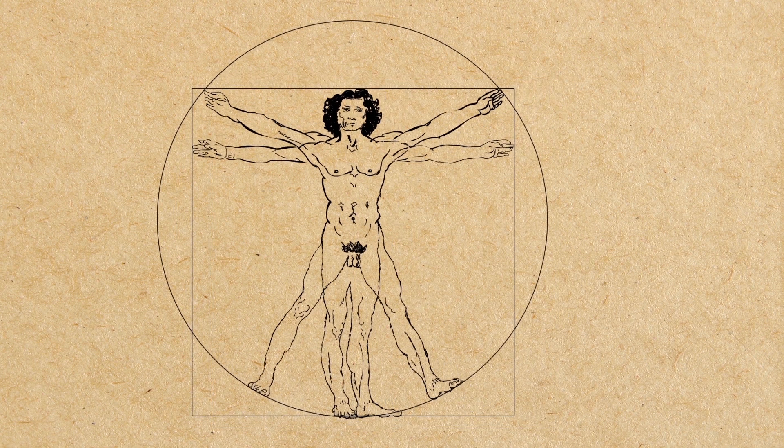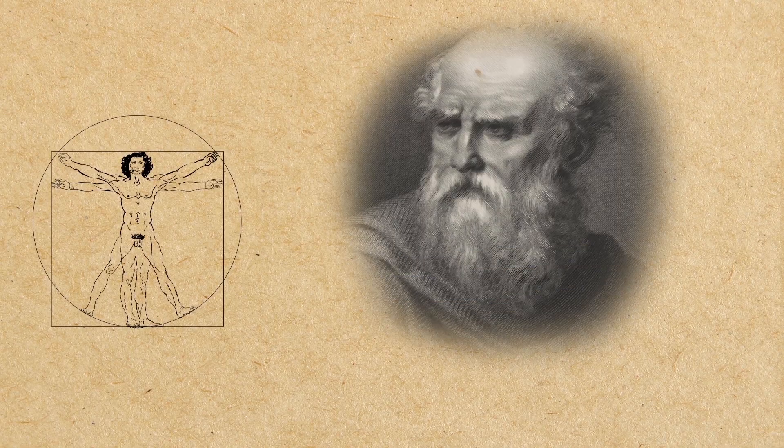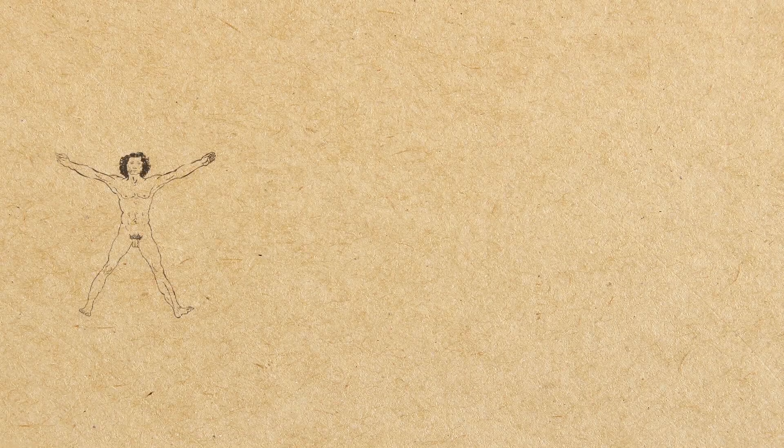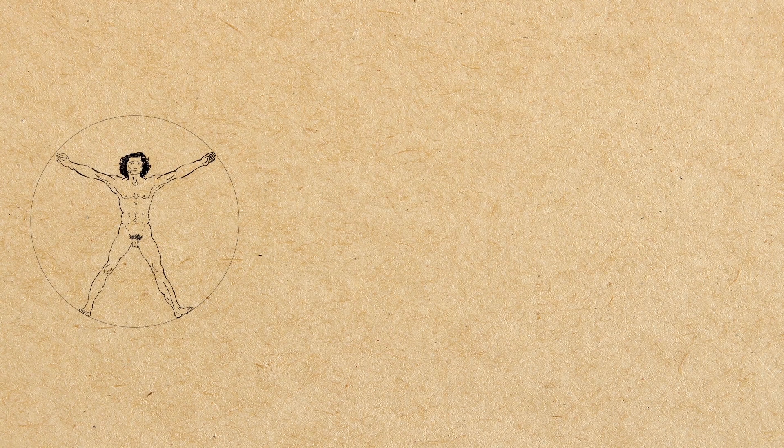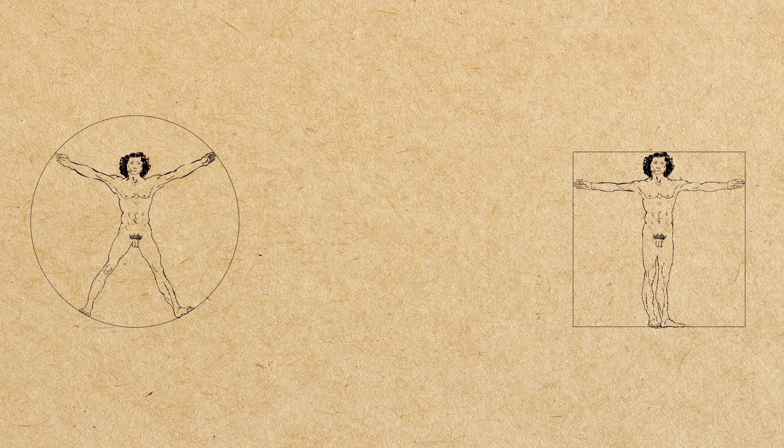Based on the work of the architect Vitruvius, Vitruvius had shown a man in two superimposed positions, with his arms and legs apart, and inscribed in a circle and square.